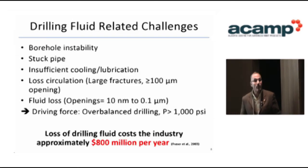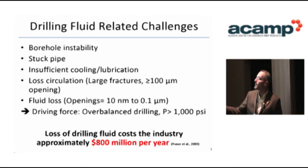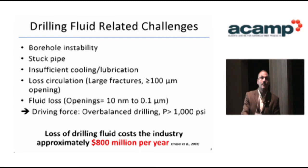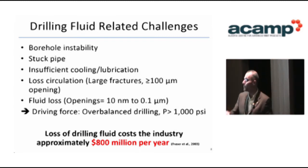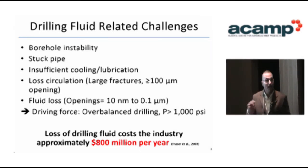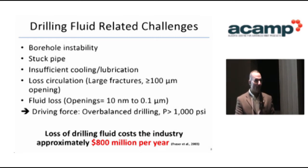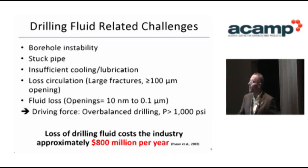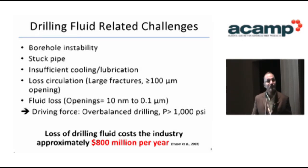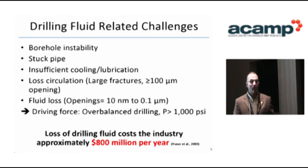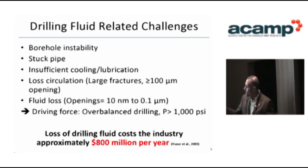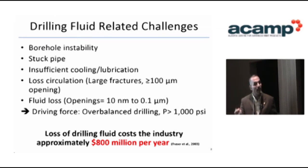The typical problems associated with drilling fluids are borehole instability, stuck pipe as a result of drilling cuttings accumulating behind the bit, and insufficient cooling and lubrication. Loss circulation is a major problem — it happens when you lose the whole drilling fluid to the formation because of large cracks and openings. There is also something called fluid loss, which is a lesser problem involving partial loss and what we call spurt loss, and our research is focused on fluid loss.